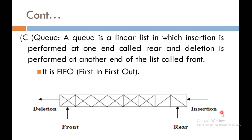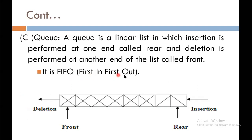For example, one element is inserted into the queue, then a second element is stored after the first, and a third element is stored after the second. This structure is the same as a queue in real life. For deletion, the first element which was inserted is removed first, so this follows FIFO — First In, First Out.